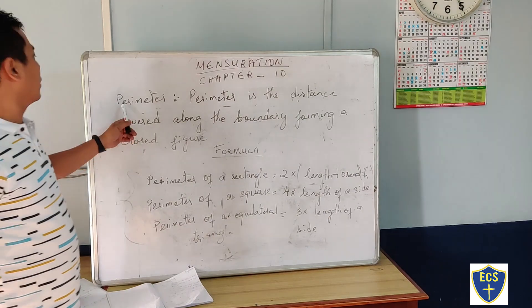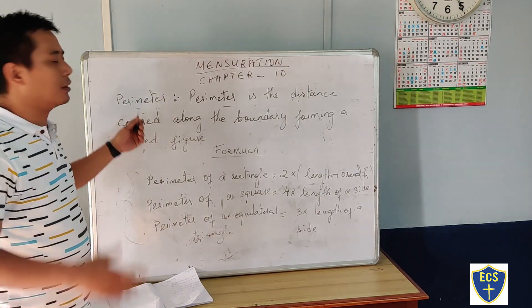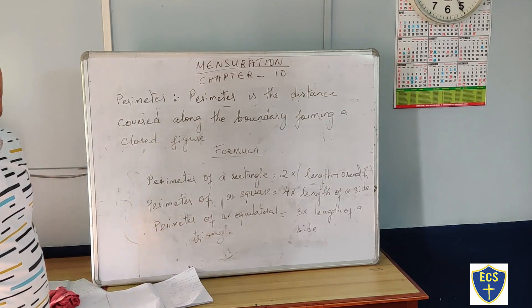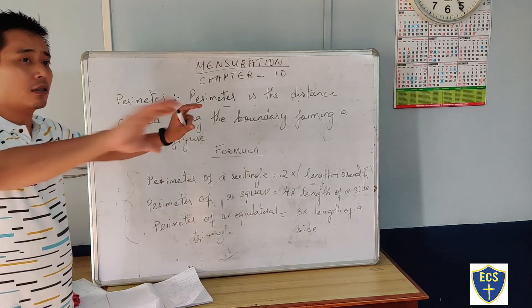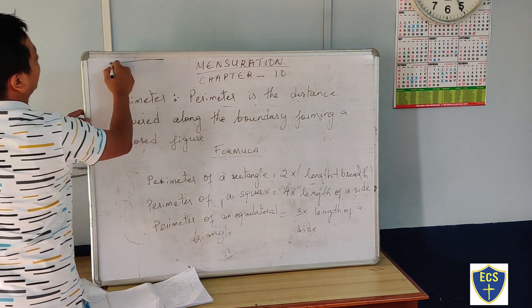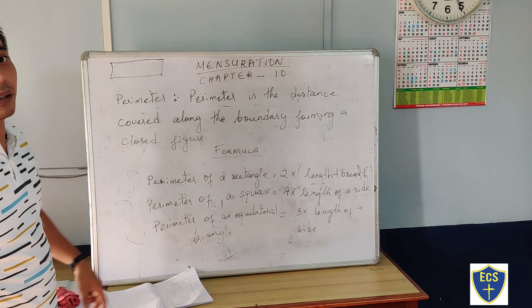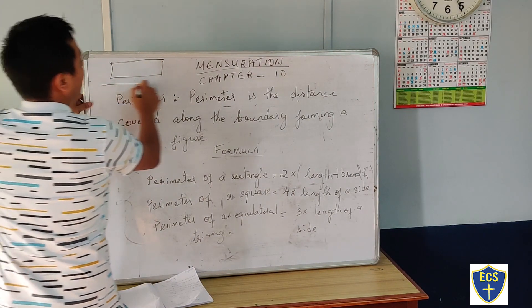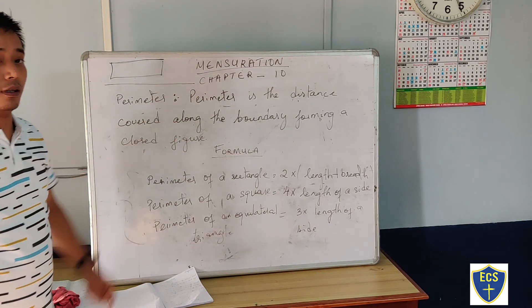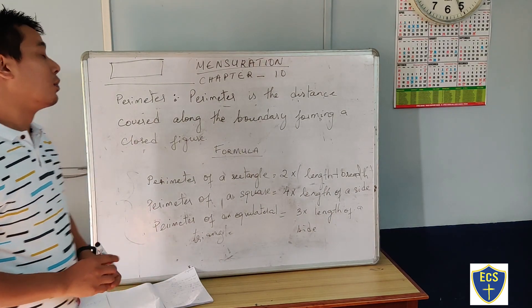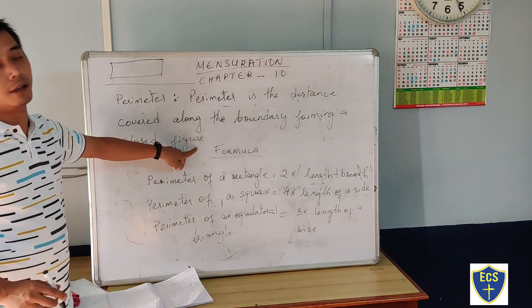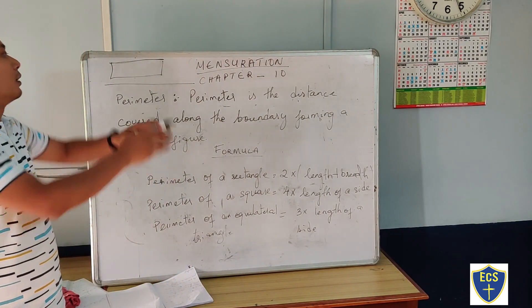Now, first, the meaning of perimeter. What is a perimeter? Perimeter is the distance covered along the boundary forming a closed figure.